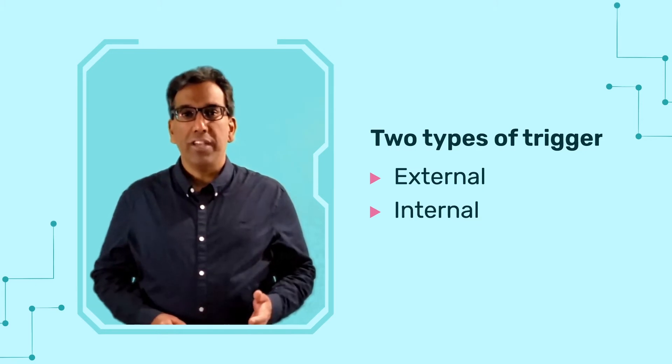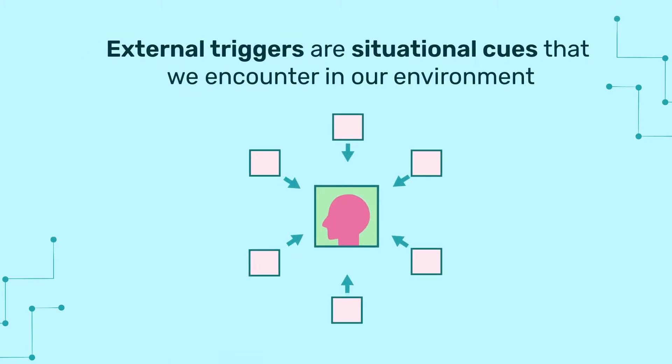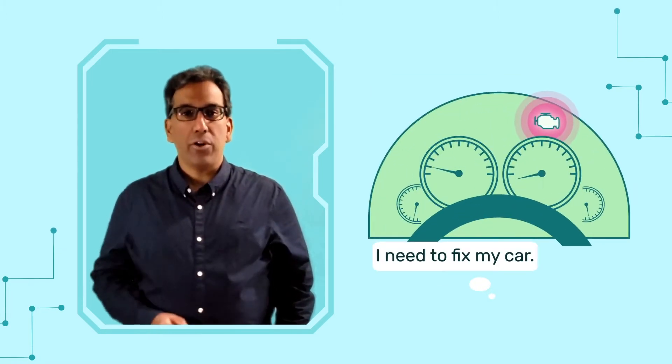There are two types of triggers: external triggers and internal triggers. External triggers are situational cues that we encounter in our environment. They're the stimuli that tell us we need to do something. For example, a check engine light is an external trigger that tells us we need to fix our car.